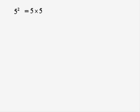Look at this number. It's 5 with a little 2 in midair next to it. What does it mean? Well, it means 5 times 5, so we could work that out as being 25. 5 with this little 2 means 25.